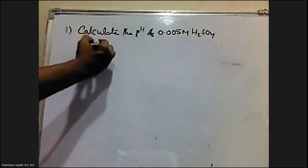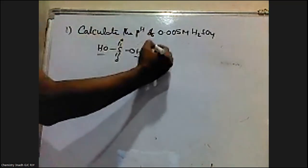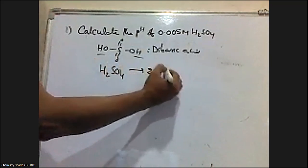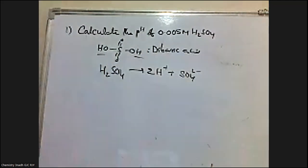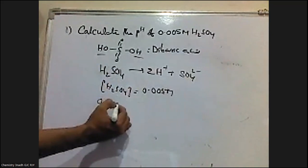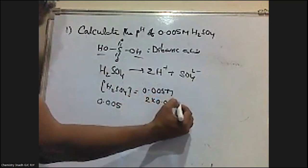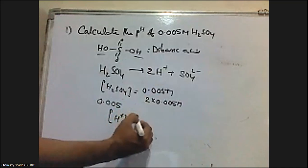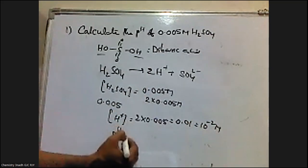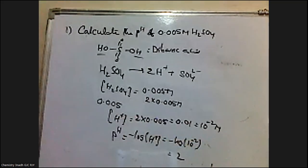Sulfuric acid is a dibasic acid. Its structure has two hydrogens connected to oxygen, a more electronegative element, making it a dibasic acid. H₂SO₄ is dissociating as 2H⁺ and SO₄²⁻. The concentration of H₂SO₄ is given as 0.005 molar. Since one H₂SO₄ molecule gives two hydronium ions, the H⁺ concentration is 2 into 0.005, which equals 0.01, which is 10 to the power of minus 2. So pH equals minus log of 10 to the power of minus 2, which corresponds to 2.